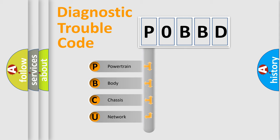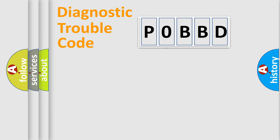We divide the electric system of an automobile into four basic units: Powertrain, Body, Chassis, and Network. This distribution is defined in the first character code.